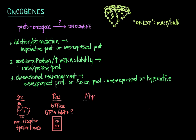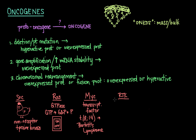The MYC oncogene codes for a transcription factor that induces cell proliferation. There is a very common translocation involving MYC between chromosome 8, where the MYC oncogene is found, and chromosome 14, which leads to a type of lymphoma called Burkitt's lymphoma. The RTK oncogene stands for receptor tyrosine kinase, which adds phosphate groups to other proteins to turn them on or off — similar to the SARC gene, which is a non-receptor tyrosine kinase, the difference being the location of the protein.